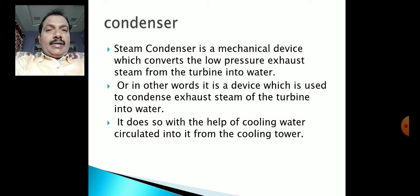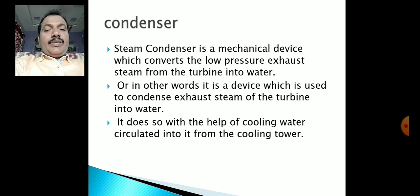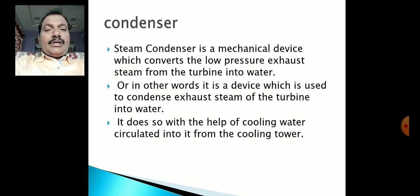The steam condenser is a mechanical device which converts the low-pressure exhaust steam from the turbine into water. In other words, it is a device used to condense the exhaust steam of the turbine into water, using cooling water circulated from the cooling tower.